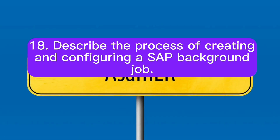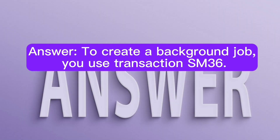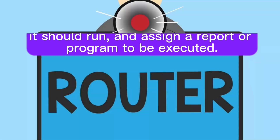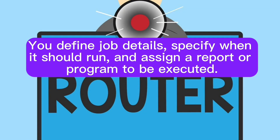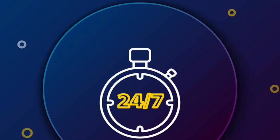Question 18: Describe the process of creating and configuring a SAP background job. To create a background job, you use transaction SM36. You define job details, specify when it should run, and assign a report or program to be executed. Background jobs are configured and scheduled in transaction SM37.